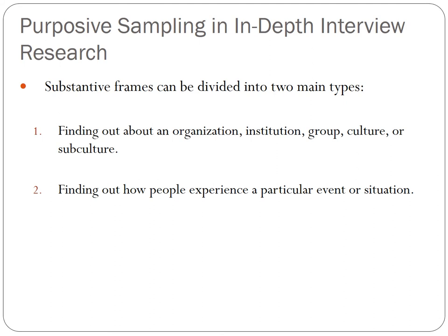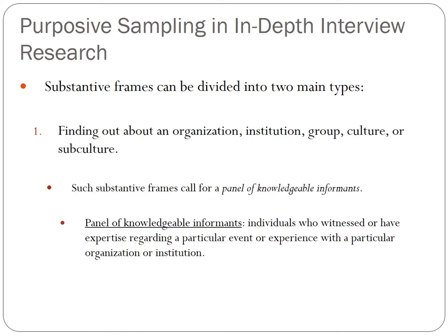Substantive frames can be divided into two types. The first is finding out about an organization, institution, group, subculture, or culture. The second is finding out how people experience a particular event or situation. These two frames can overlap quite a bit — for instance, if a researcher is interested in how people who worked at the U.S. Capitol dealt with the insurrection that happened in 2021. To find out about an organization, institution, group, subculture, or culture, one needs a panel of knowledgeable informants — individuals who witnessed or have expertise regarding a particular organization, institution, group, subculture, or culture.